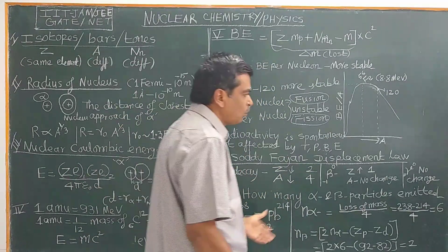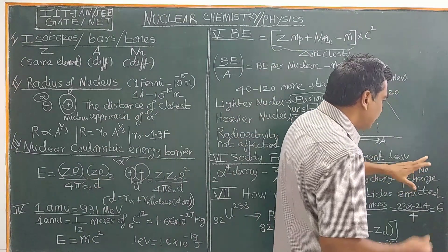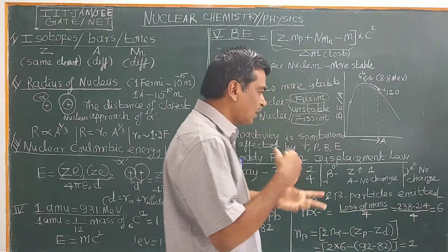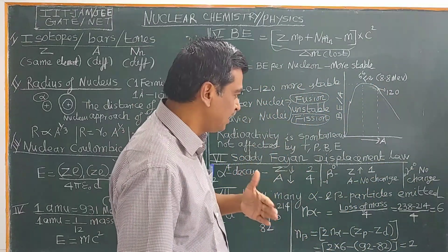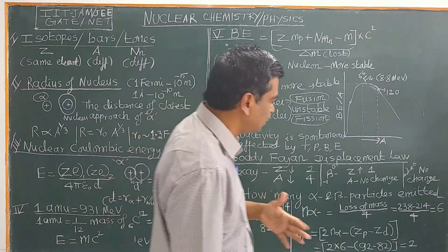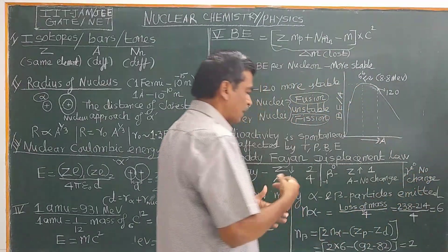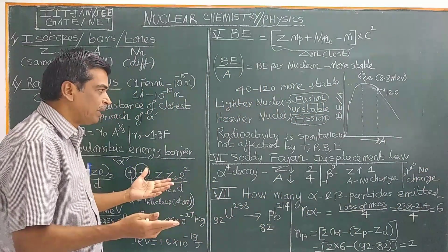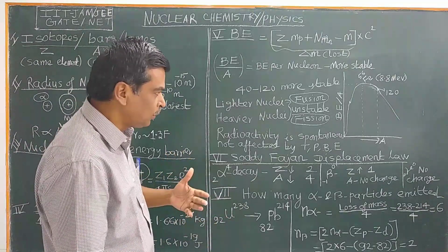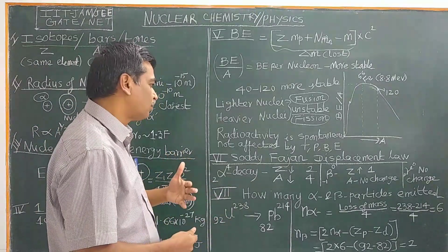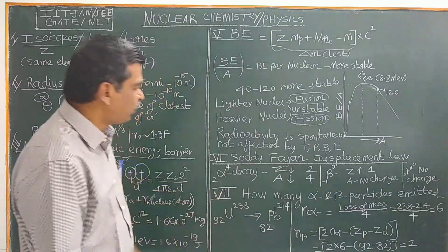In the case of gamma rays, there is no change — gamma rays are electromagnetic radiation, they have no mass and no charge. Therefore, when gamma rays are emitted, there is no change in atomic number or mass number of the daughter nucleus.